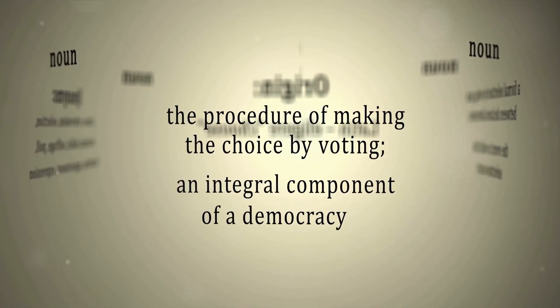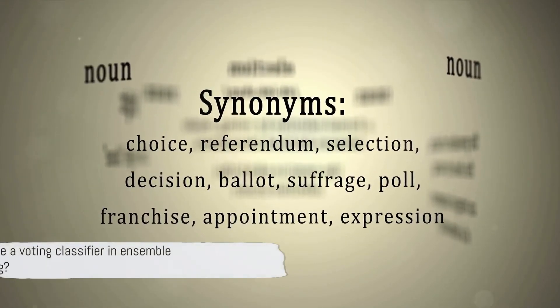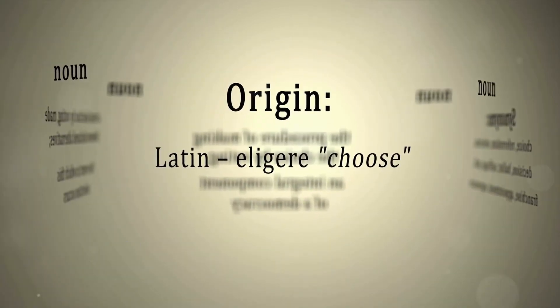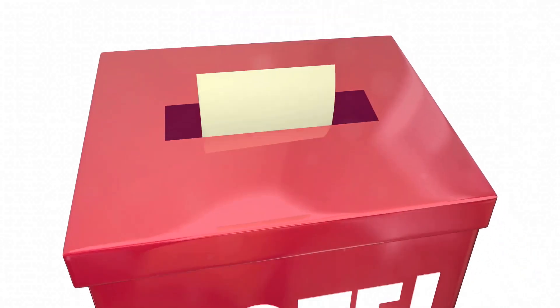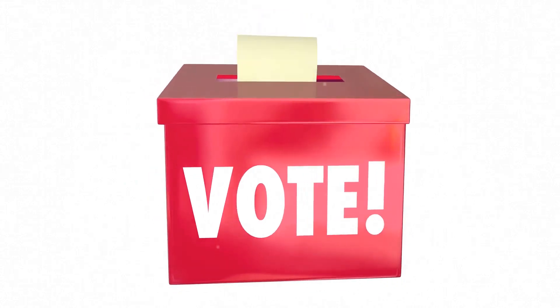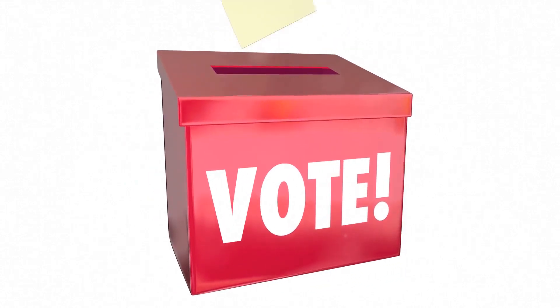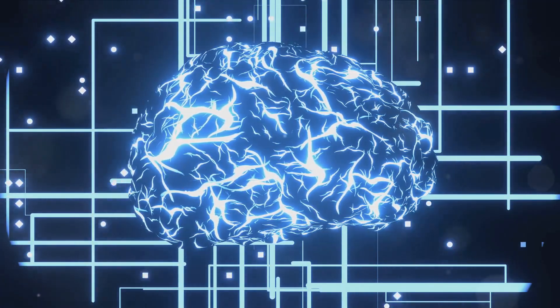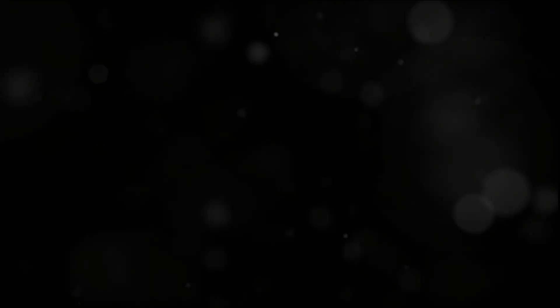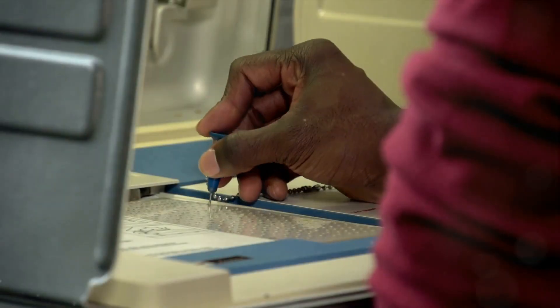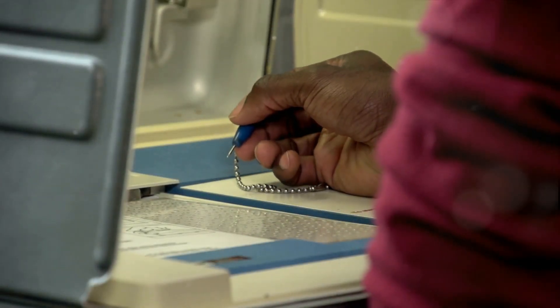In summary, a voting classifier in ensemble learning is a method where multiple learning models come together to predict an output. It operates on the principle that a group decision is often better than a single decision. This can be done through hard voting, where each model votes for a class and the majority wins, or soft voting, where the confidence of each model is taken into account. The ultimate goal is to achieve better accuracy and performance in machine learning tasks. So the next time you're puzzled by a tricky question, remember the voting classifier — sometimes it's better to ask the audience.